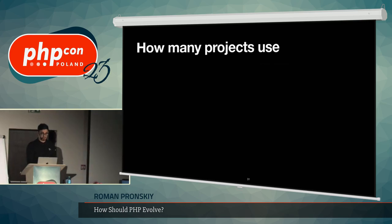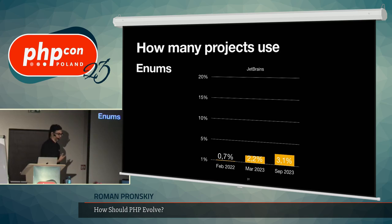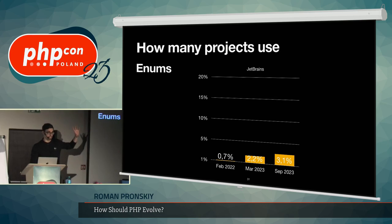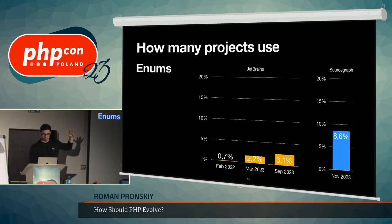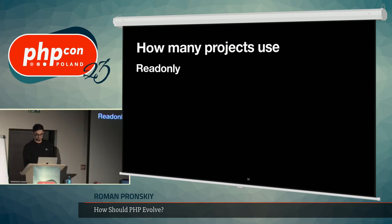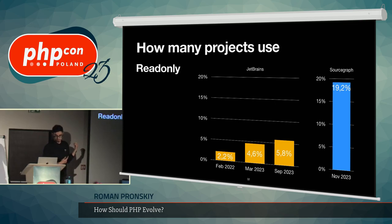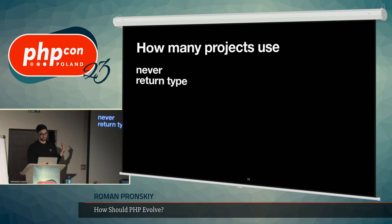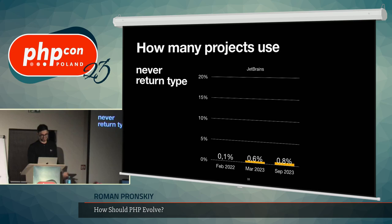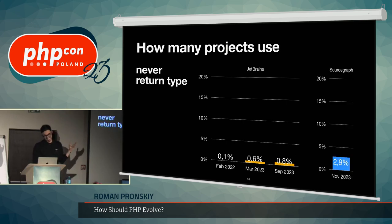For example, how many projects use enums? In 2022, no one used them. Now about 3% in the broad corpus use them, but top projects show much higher adoption — this pattern repeats. Readonly classes and readonly properties are quite popular and very popular in top projects. The never return type? Almost no one uses it — some top open source projects do, but not many.